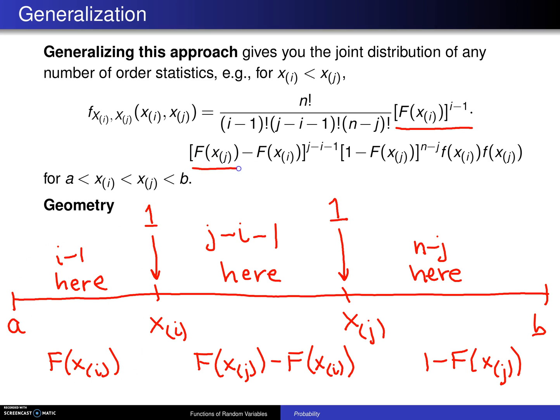This term right here accounts for the second piece. This term right here accounts for this third piece. And finally, the last two account for the single observations that fall right there.